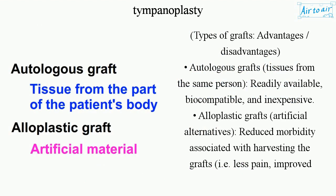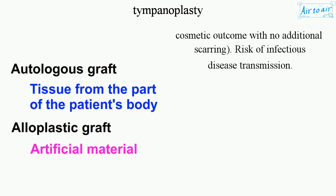There are two main types of grafts. Autologous grafts use tissues from the same person — they are readily available, biocompatible, and inexpensive. Alloplastic grafts are artificial alternatives offering reduced morbidity associated with harvesting, less pain, and improved cosmetic outcome with no additional scarring, though they carry a risk of infectious disease transmission.